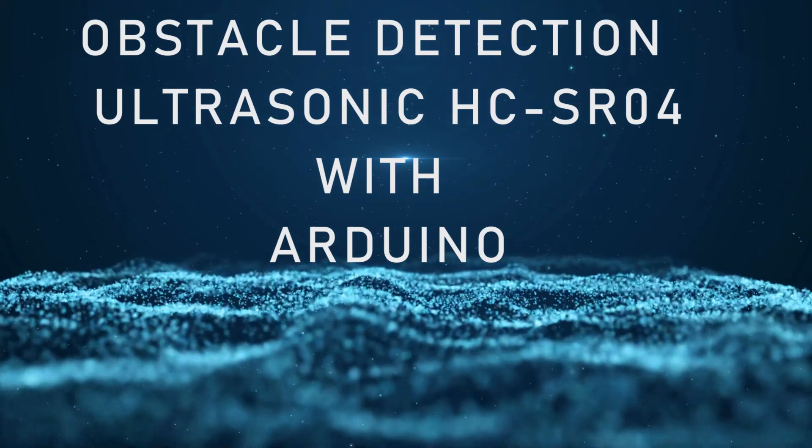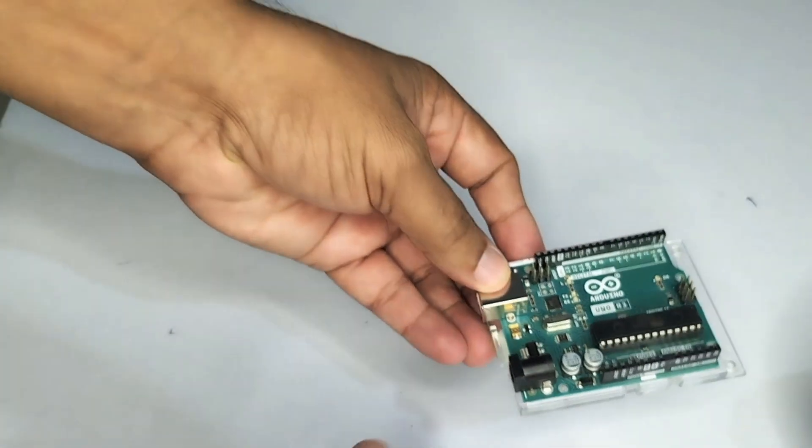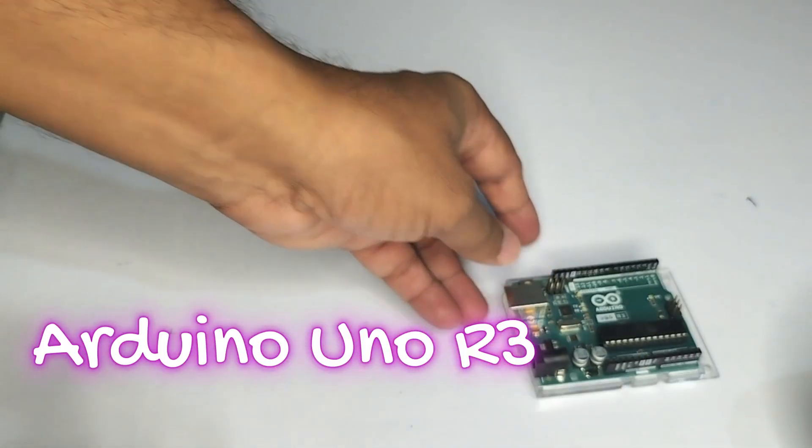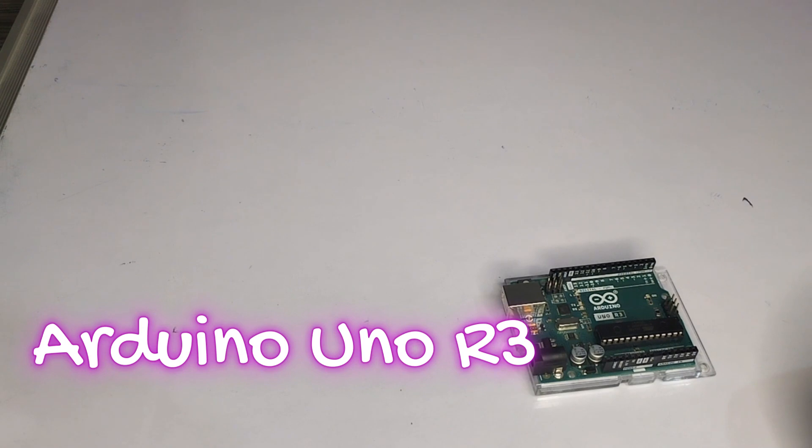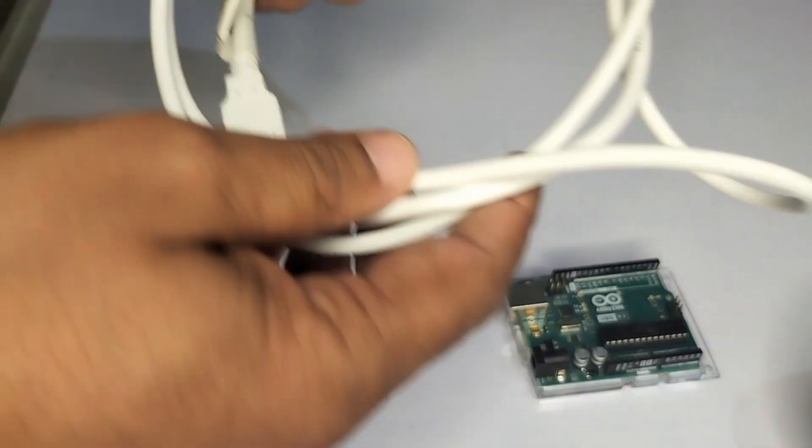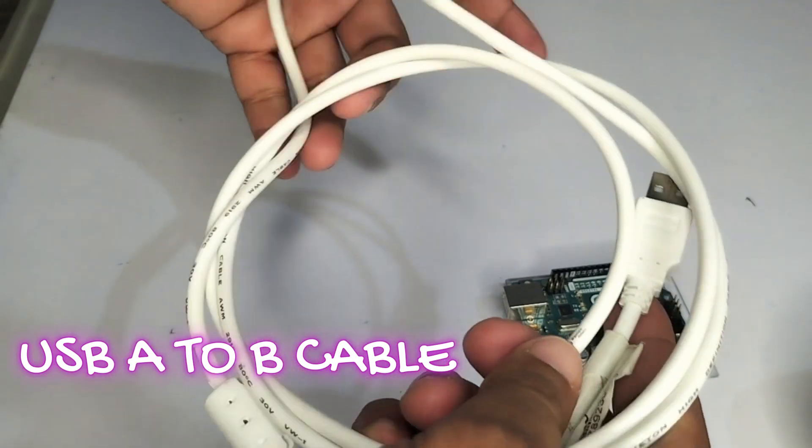Hi friends, welcome to our channel. For this project, the following are required. I am keeping the Arduino Uno here. The second one, in order to get the power, we need to have a USB A to B cable.